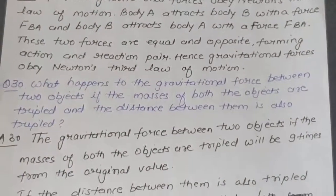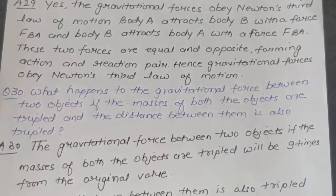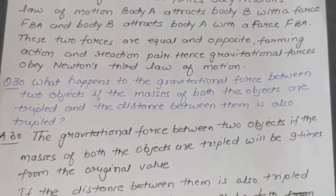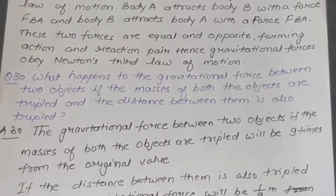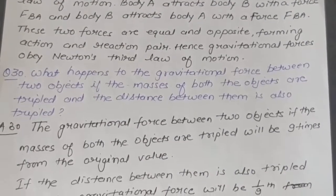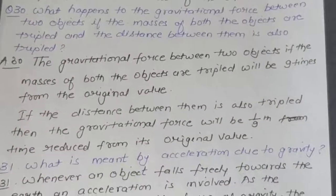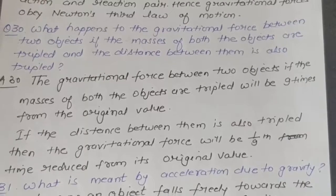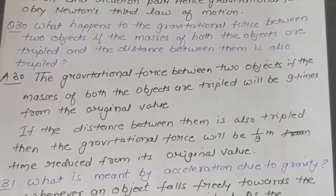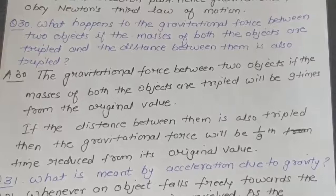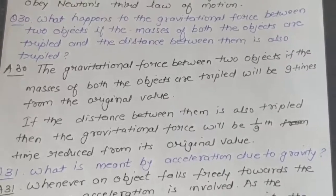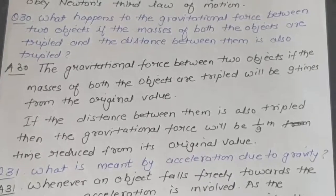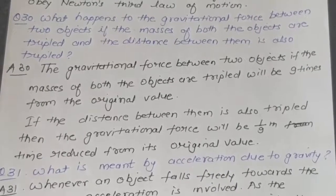Question 30: What happens to the gravitational force between two objects if the masses of both objects are tripled and the distance between them is also tripled? Answer: When masses are tripled, the gravitational force becomes 9 times the original value. When the distance is also tripled, the gravitational force is reduced to one-ninth of its original value.